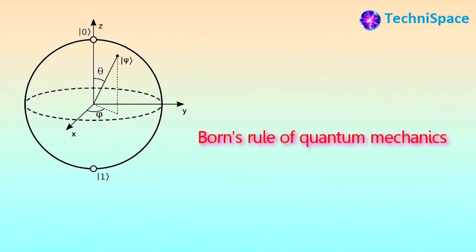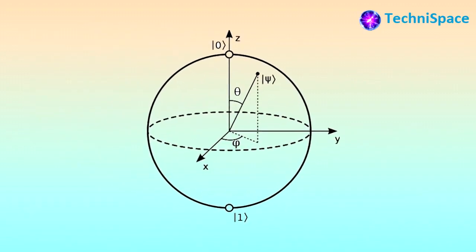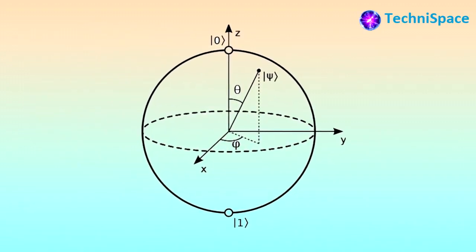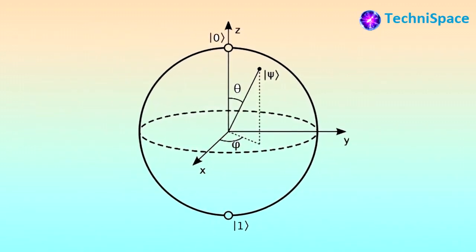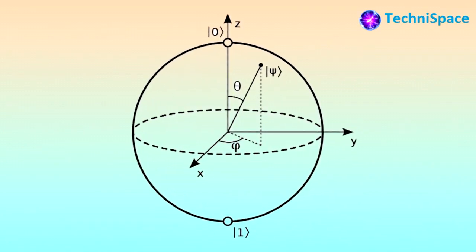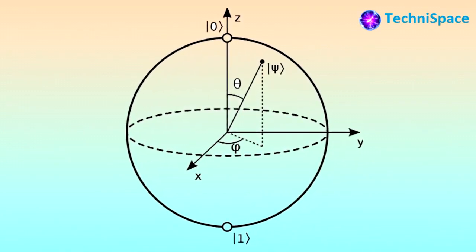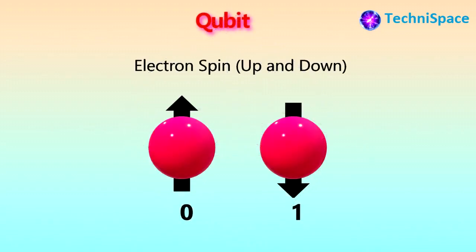Qubit measurement can be explained with the help of Born's rule in quantum mechanics, with the possibility of measuring a quantum system in an easy way. The Bloch sphere represents a two-dimensional surface showing pure qubit states along with their angles and degrees. Qubits can be formed from photons, electrons, atoms, or molecules, and can exist in two states such as spin-up and spin-down.